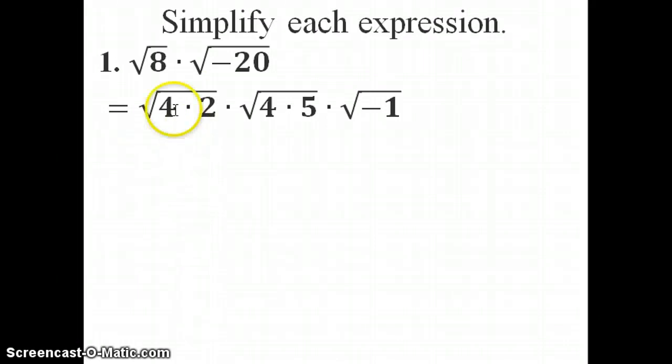So when I simplify this down, here's my 4 times 2, that's my 8. Negative 20 is 4 times 5 times a negative 1. And I brought this negative 1 out here, because I know that negative 1 is equal to i.